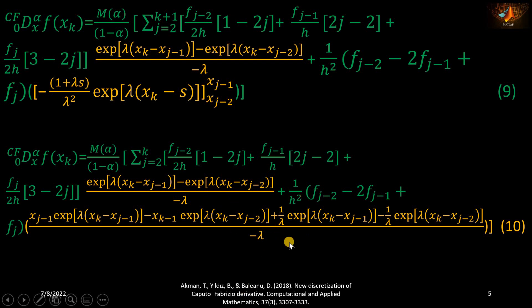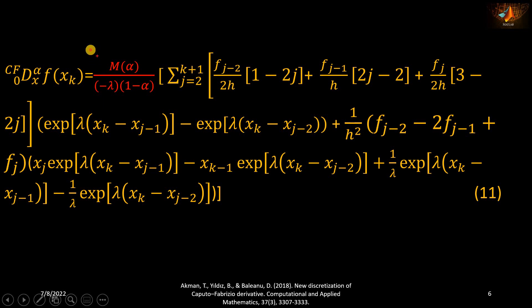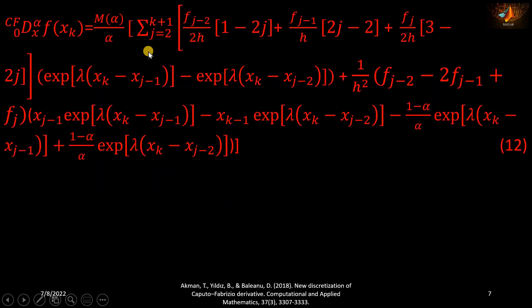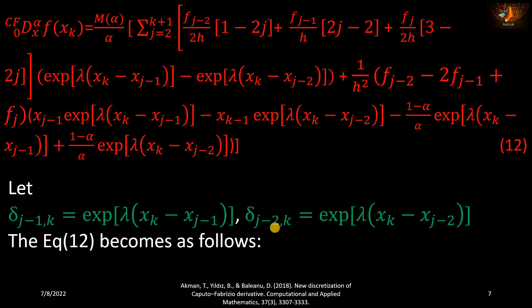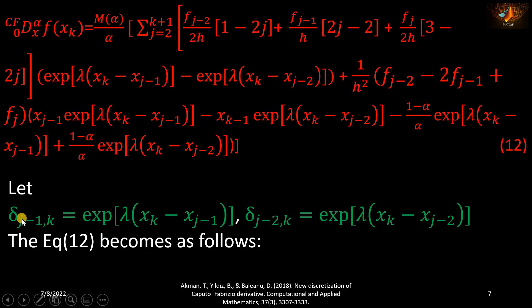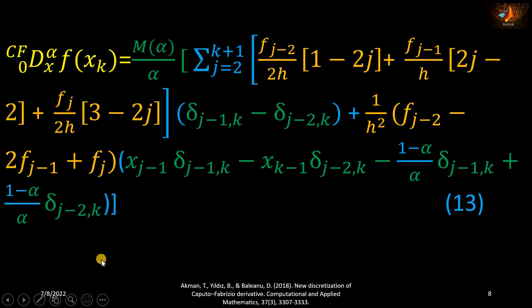In equation ten, there is a common constant minus lambda which we take outside, giving equation number eleven. Since lambda equals minus alpha over (1 minus alpha), the simplified form leaves us with alpha in the denominator, giving equation number twelve. Equation twelve is quite lengthy and difficult to code, so we introduce shortcut symbols: delta_{j-1} for terms where j minus one appears, and delta_{j-2} similarly. Substituting these Greek letters transforms equation twelve into equation number thirteen.